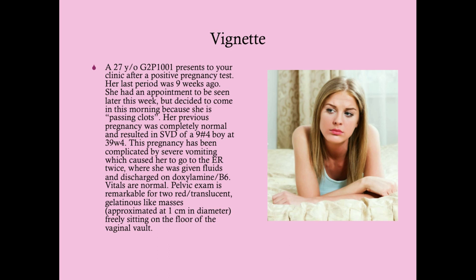That her last period was nine weeks ago indicates she probably is indeed pregnant because she should have had two periods by now. She's also having significant nausea, which also points to pregnancy. One thing this could be besides a molar pregnancy is a threatened or inevitable abortion, which is not an uncommon presentation in a woman having vaginal bleeding. You would need to look at the cervix and see whether or not it's dilated to differentiate between the two.